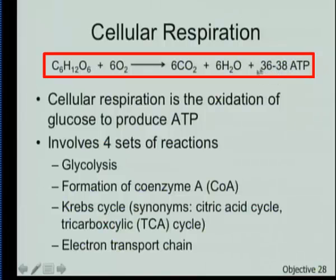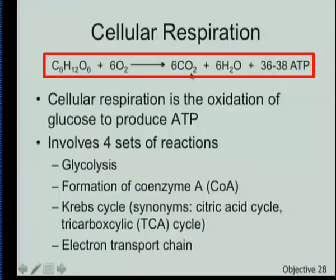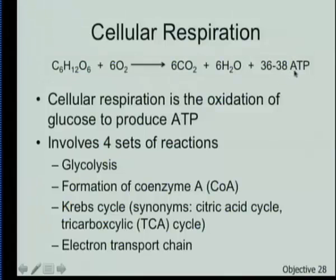The waste products of that process will be a little bit of water — we call it metabolic water because this is our metabolism — and also the CO2 that we have to breathe out. So we're going to take glucose, and in the presence of oxygen, produce CO2, a little metabolic water, and a whole lot — 36 to 38 ATP — which provides energy we can transfer to other processes.